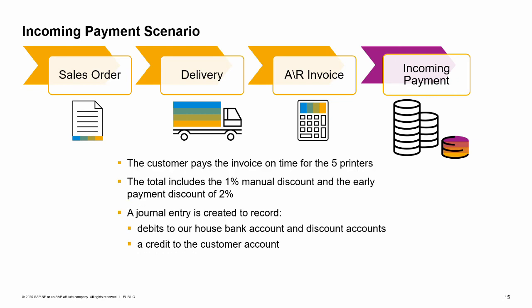Let us consider the business example. Our customer pays the invoice on time for the five printers. The total includes the 1% manual discount and the early payment discount of 2%. The early payment discount defaults in from the payment terms associated with the customer master record. A journal entry is created to record debits to our house bank account or a clearing account depending on the selected payment means, and to cash discount accounts, and a credit to the customer account.